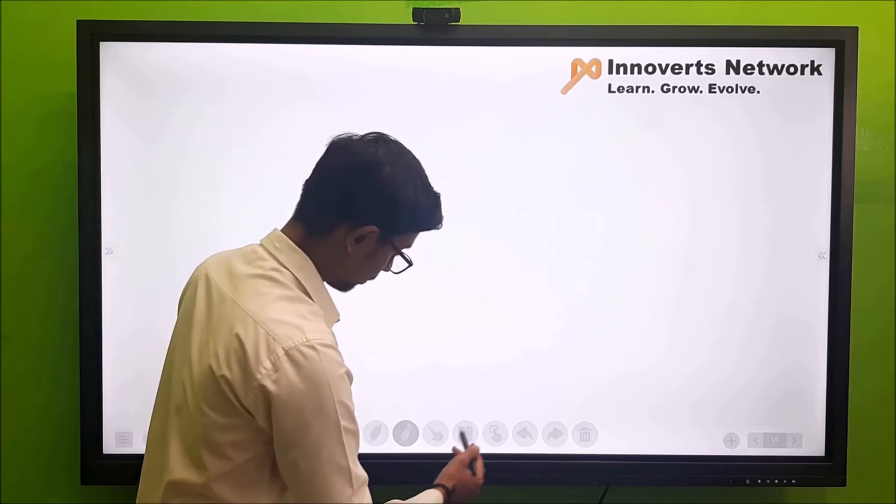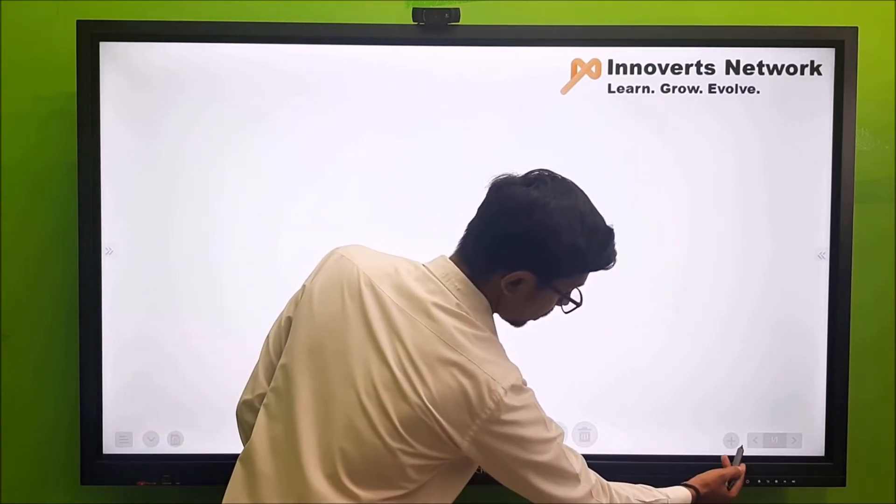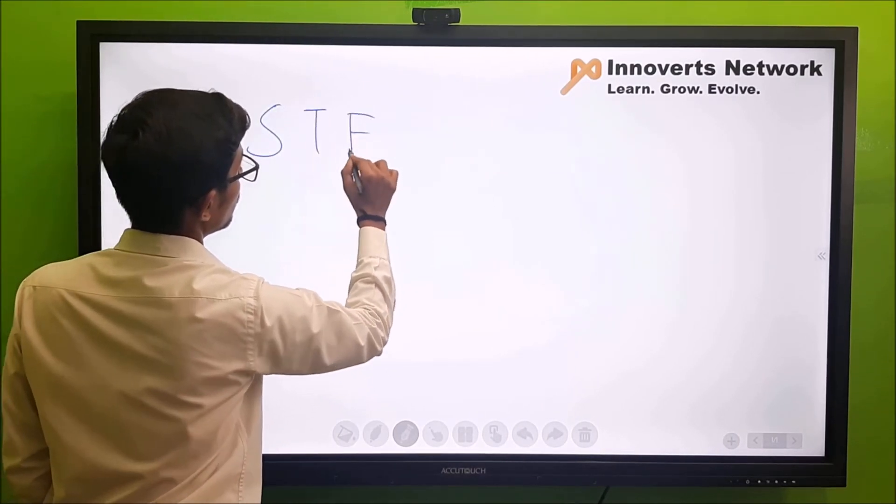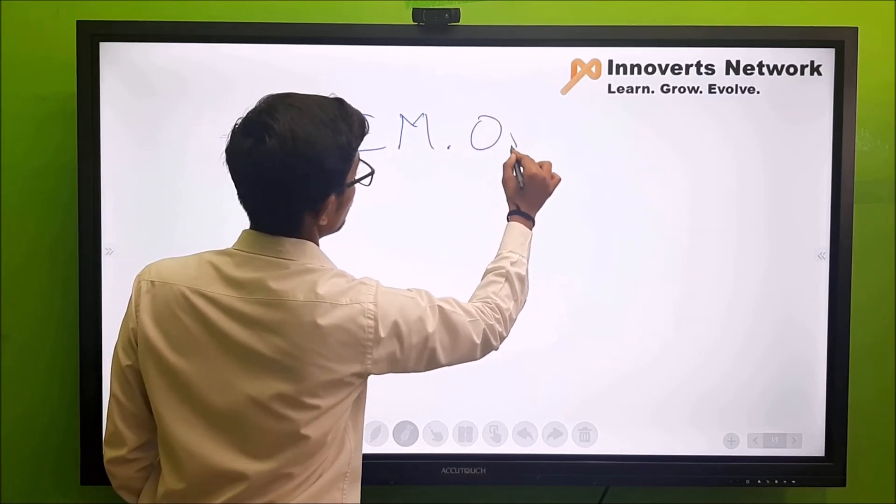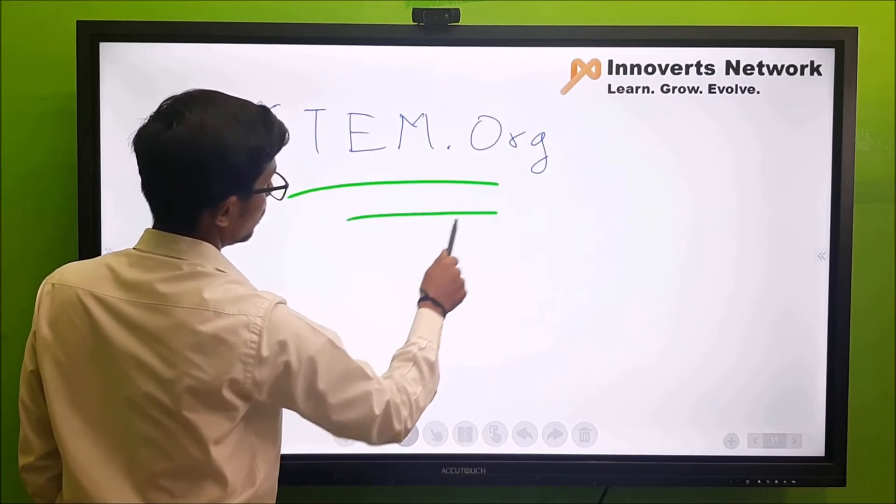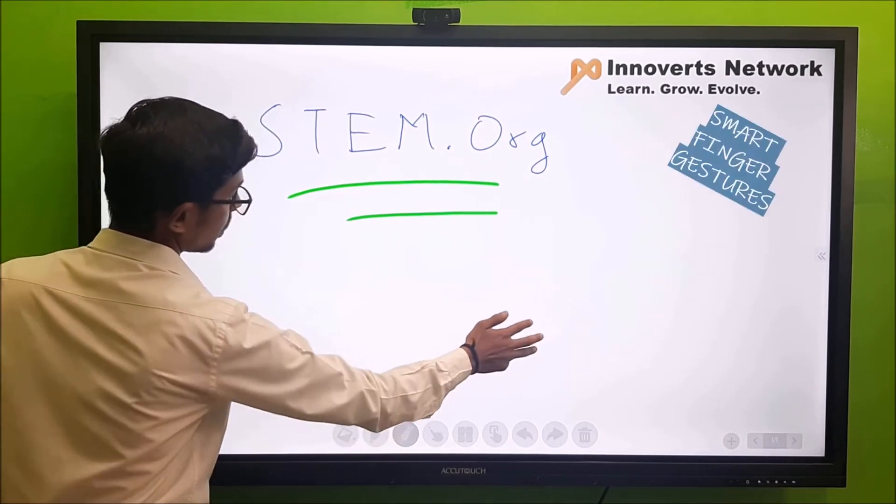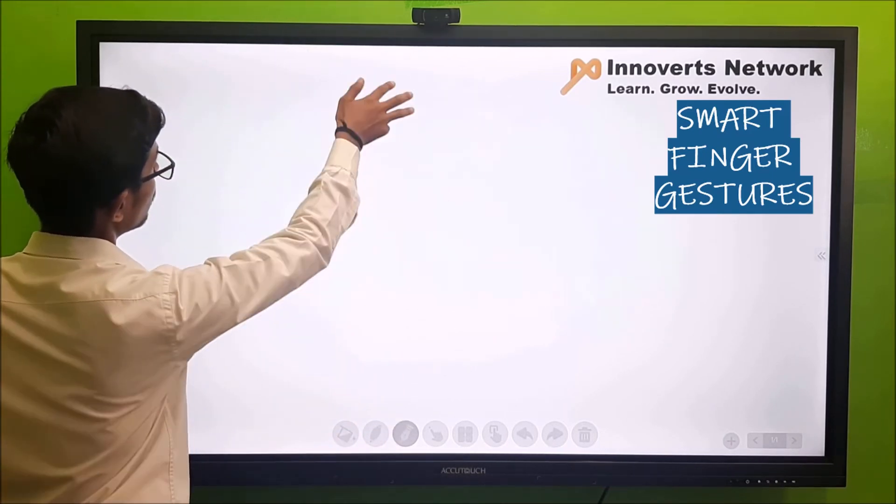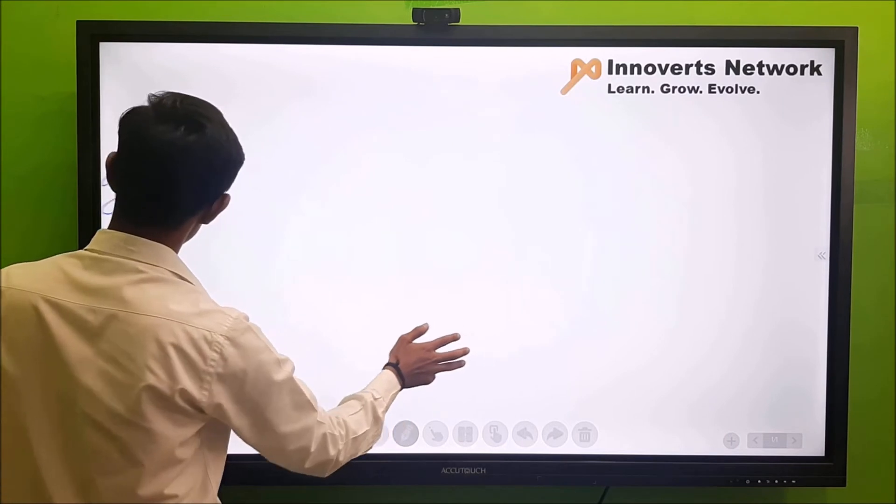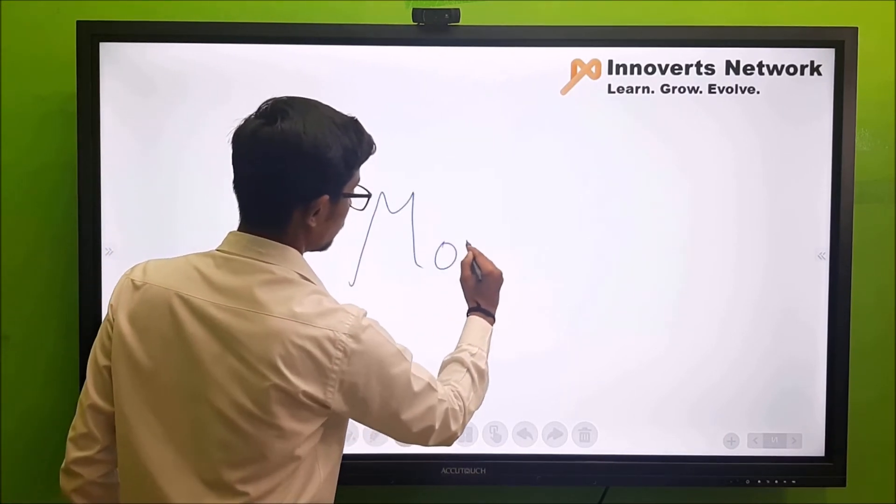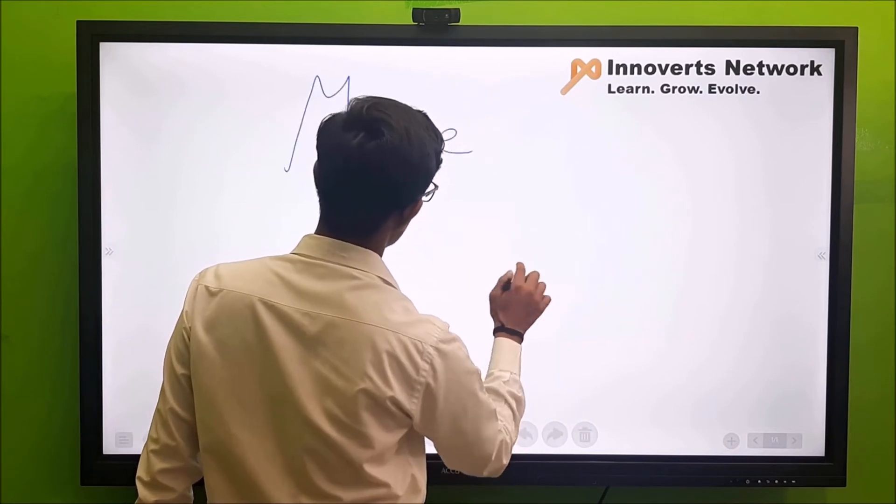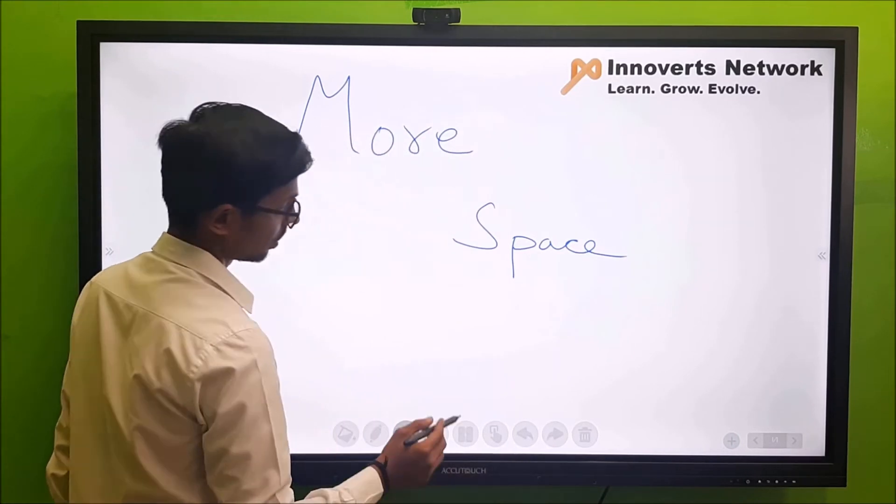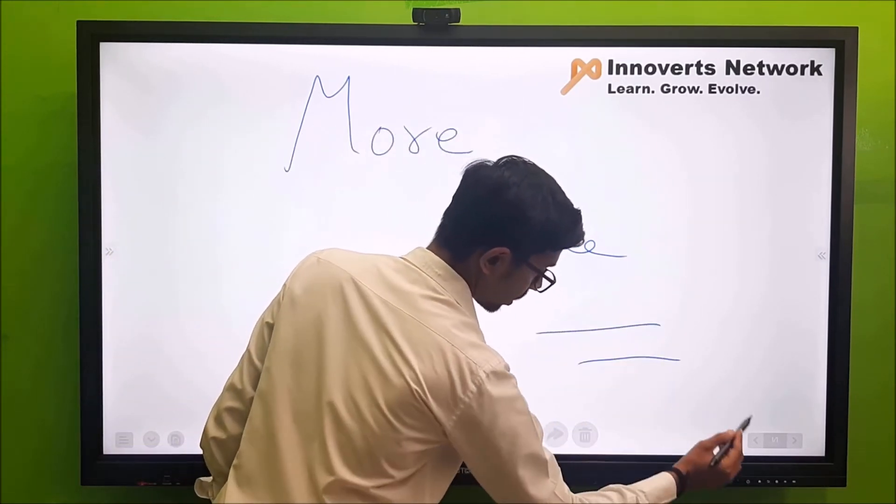Once I have an empty screen, I get an option of adding another page or even to explain a new topic on this particular screen. So now let me start by writing another new topic. Once I've completed my point or topic, I want some more space on the screen. With my three-finger gesture, I'm able to move the content to the left or to the top and get more space on my screen. This feature is not available on all interactive flat panels. They come with basically limited space, but with Acutouch you get infinite space in your writing board.